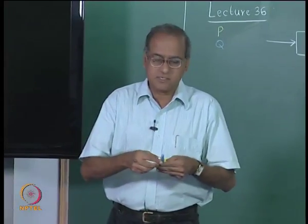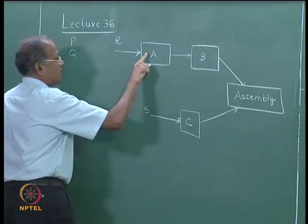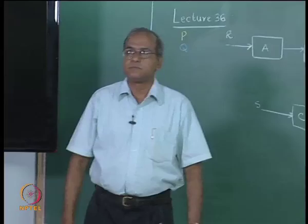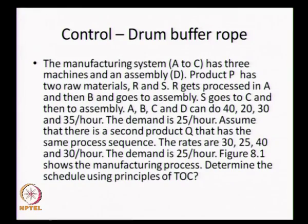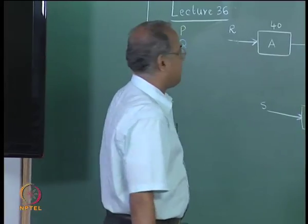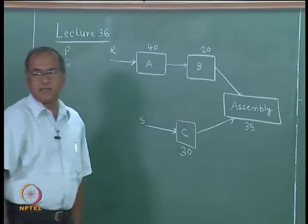For product P, it has two raw materials R and S. R will come to machine A, S will come to machine C; R goes through A and B and then to assembly, S goes through C and then to assembly. Machines A, B, C, and D can do 40, 20, 30, and 35 per hour respectively.